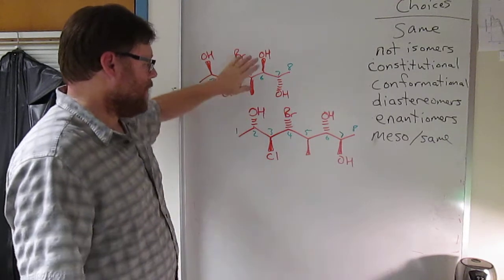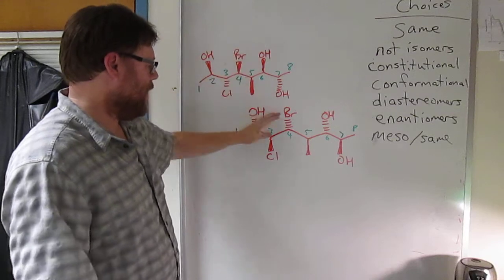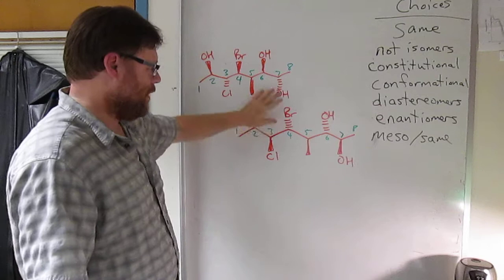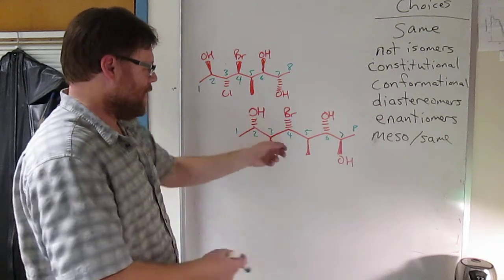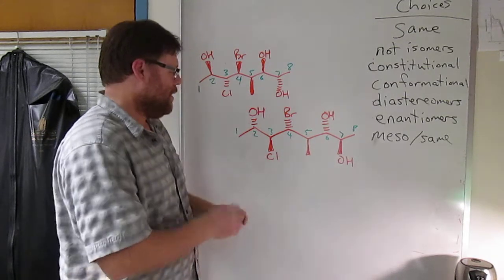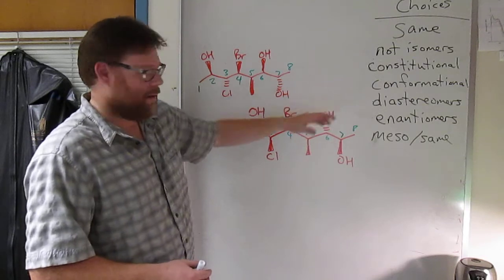And so the two molecules clearly aren't superimposable. There's no way to get them superimposable if all of them are the same except one. Because remember you can't just break C5 off and put it back on the other side. You can only rotate bonds. If I rotate bonds, they're not gonna be superimposable.